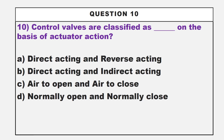Our 10th question is related to the classification of control valves. Control valves are classified as dash on the basis of actuator action. Option A: direct acting and reverse acting. Option B: direct acting and indirect acting. Option C: air to open and air to close. Option D: normally open and normally closed.